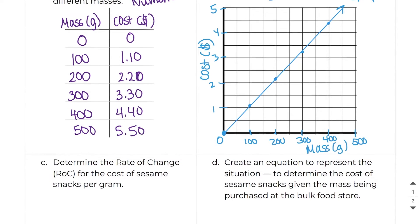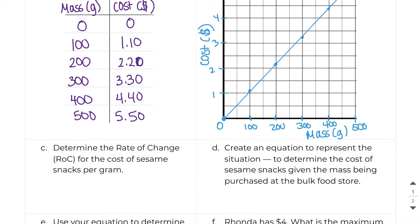All right, so now for part C, it says to determine the rate of change for the cost of sesame snacks per gram. So we have a couple ways that we can do this, but regardless, whenever we find our rate of change, we always do rise over run. So if you look here, I'm going to show you a few different ways that we can do this. We can see here that this rose by $1.10. So this is the rise. And we know this one's the rise because the Y is always the rise. Rise is up and down. And this right here is the run, and it's 100. So here we can say the rise is $1.10. The run is 100 grams.